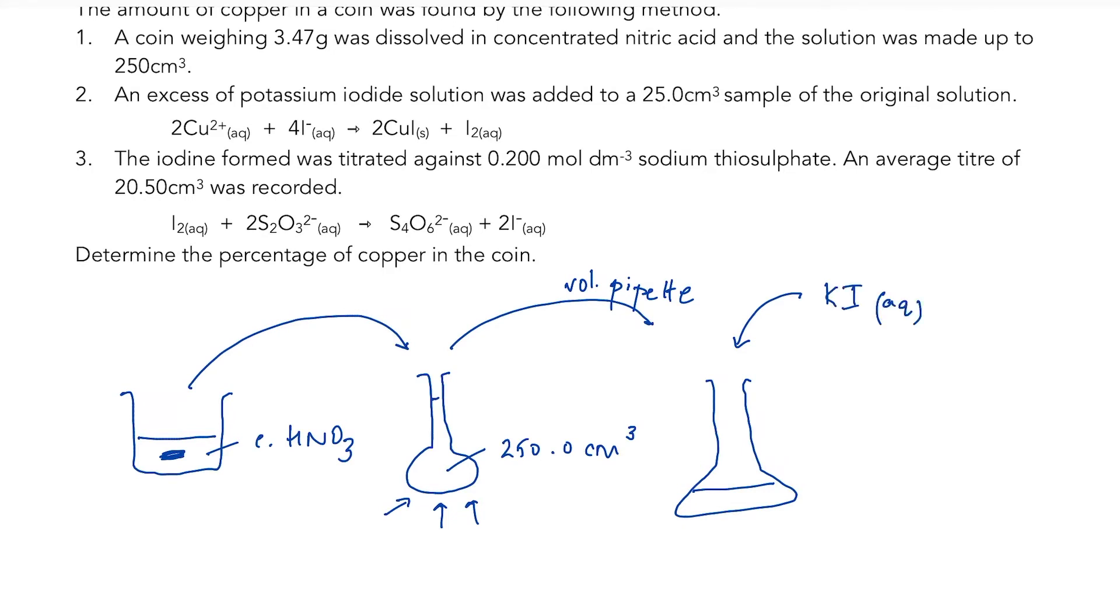And the job here as the iodide ions in that solution is to form iodine. So the iodide ions are oxidised to iodine. And then we can do a classic iodine thiosulfate titration with a starch indicator. Because if I know how much iodine I've got, I can then work out how much copper I had to begin with.